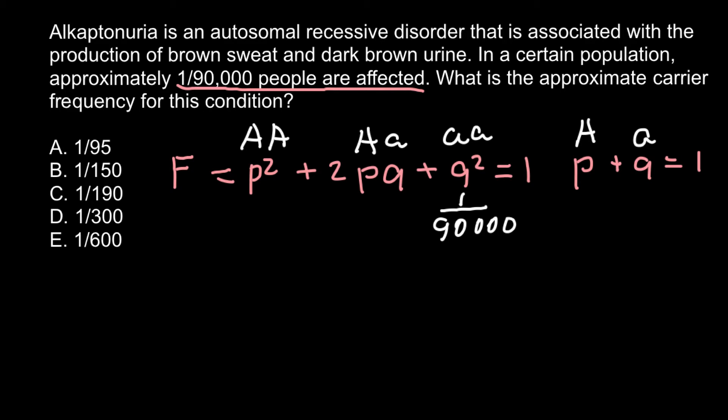So q would equal the square root of q². So q would equal 1 out of 300.